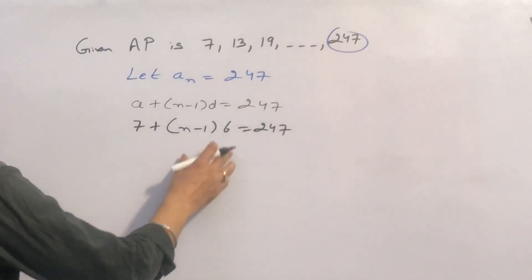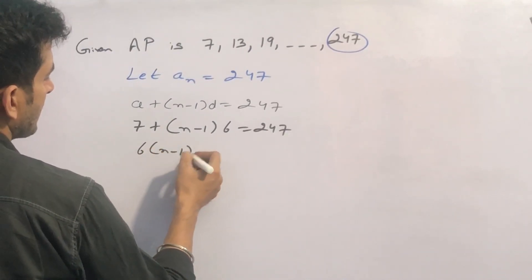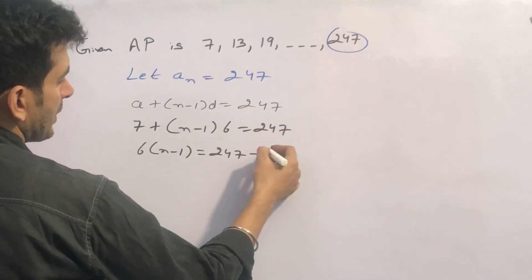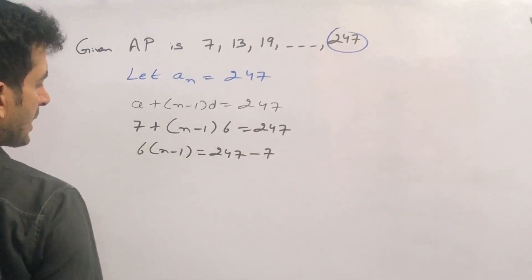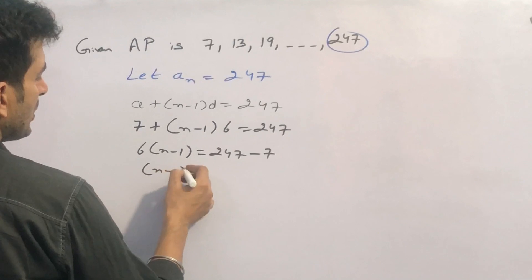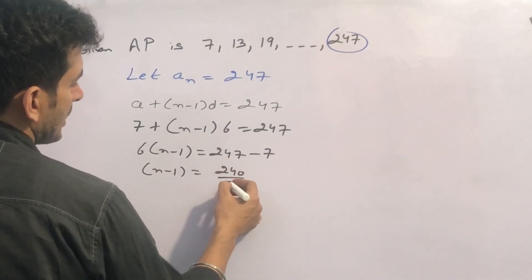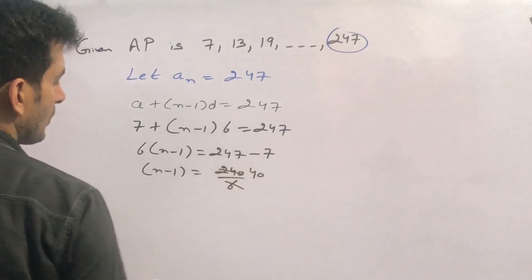So can I say that 6 within bracket N minus 1 equal to 247 plus 7 when shifted to the right hand side, this will be minus 7. So N minus 1 will be equal to 247 minus 7, which is 240 divided by 6.